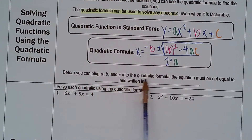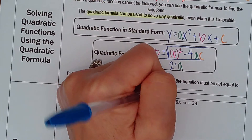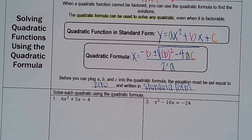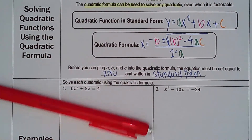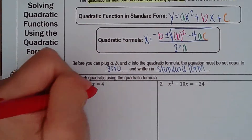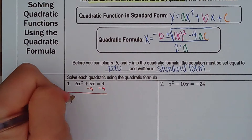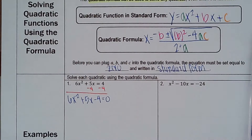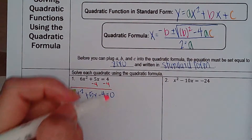Before you can plug a, b, and c into the quadratic formula, the equation must be set equal to 0 and written in standard form. Looking at number 1, it is not in standard form. I have to move this 4 over, and I get 6x² plus 5x minus 4 equals 0. I'm going to go ahead and highlight these, just so we can continue with our color coding for the start.